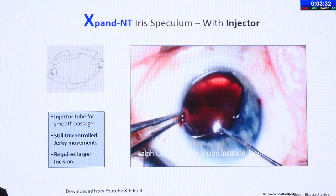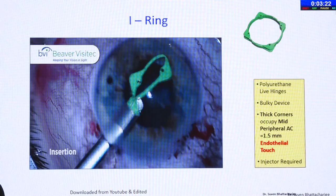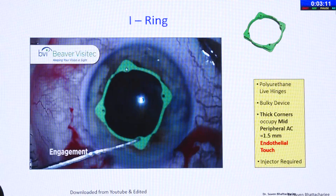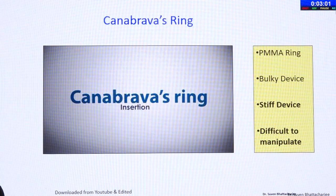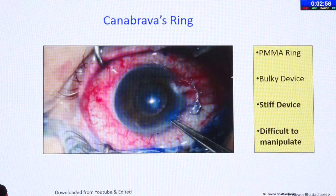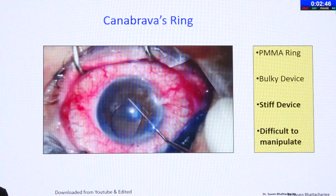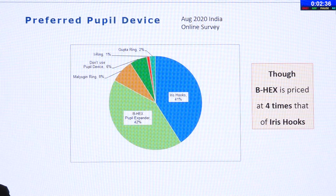The eye ring from Beaver Visitec has been used a little, but it is a fairly bulky device with a high vertical profile. It is made of polyurethane with live hinges. In the periphery the anterior chamber is shallower, so 1.5 mm can be a little much. The Grabow ring by Sergio Grabow is PMMA — pretty rigid, difficult to handle, bulky, and would work in some cases but not be favorable in others. Some flanges go below the iris and some above — it is not really versatile. We conducted an online survey around the end of the first COVID period and were surprised to find that the BHEX pupil expander was pretty popular, despite being four times the cost of iris hooks.